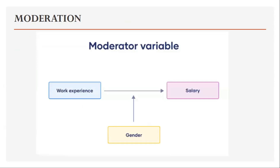Let's take an example of moderating variables. In a survey of work experience and salary, you expect that the number of years of work experience can predict salary, but gender identity can moderate the relationship between work experience and salary. This means that the relationship between years of experience and salary would differ for men, women, and people of different gender identities.